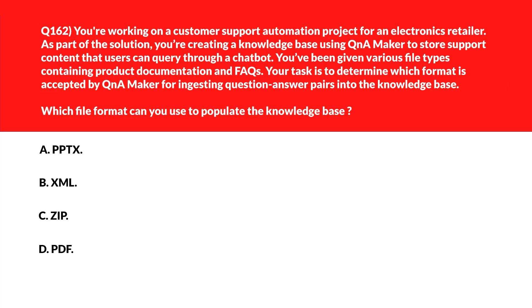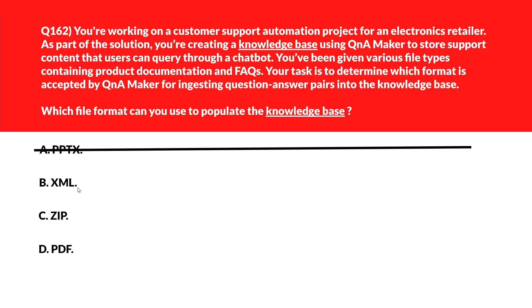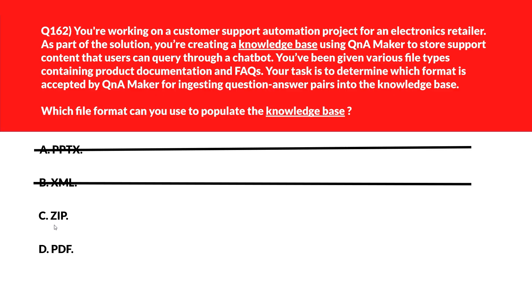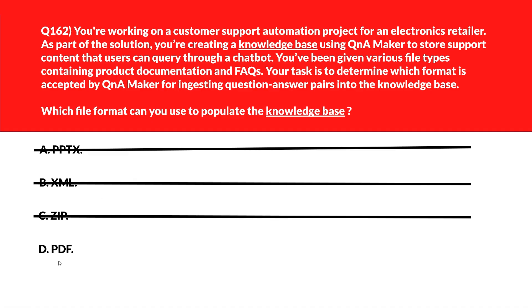Option C is the right choice. Now let's tackle a question about knowledge base. Option A: PPTX — presentation slides contain visual and text blocks that aren't structured for QnA extraction, so it's out. Option B: XML — QnA Maker doesn't process XML files for content ingestion, so this is a distractor. Option C: ZIP — compressed folders are not parsed for knowledge base creation. Wrong choice. Option D: PDF — PDF documents are supported by QnA Maker for extracting question-answer pairs to build a structured knowledge base. Option D, PDF, is the right choice.